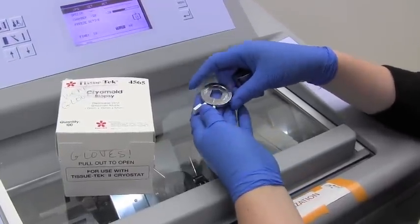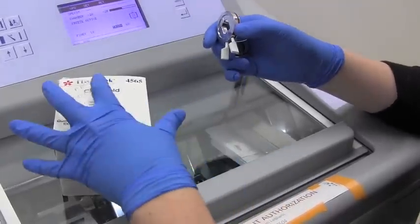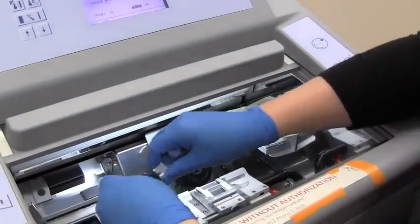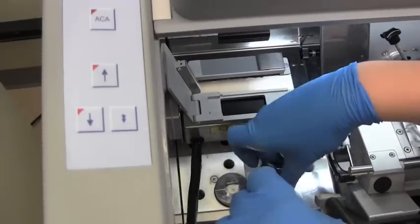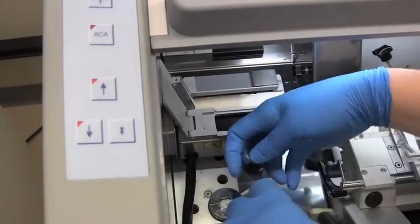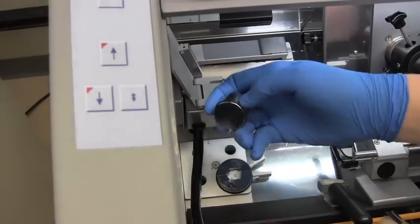Or you can do it one at a time, which uses this setup, which is something that comes with the actual cryostat. What you would do is pour your cryo matrix into this weighted circle, pour the cryo matrix in, put your sample in, and then hold it down with this weight. This is pretty hefty. Hold it down with the weight.